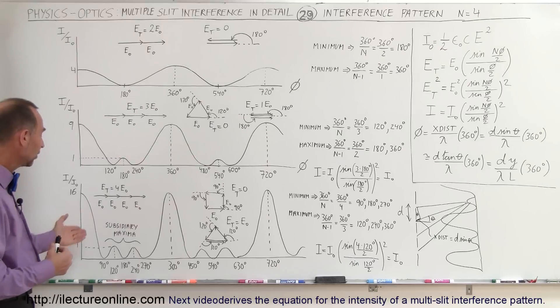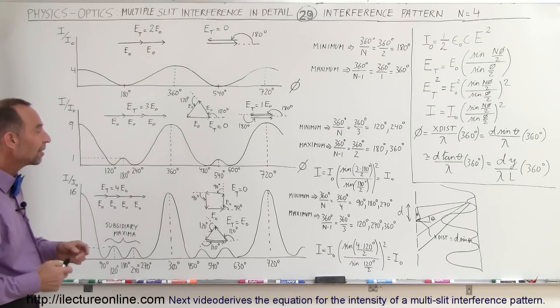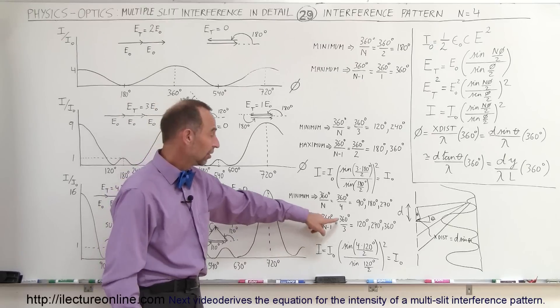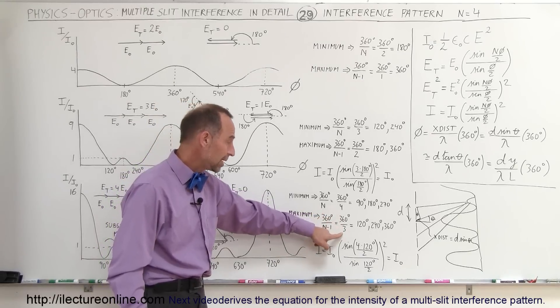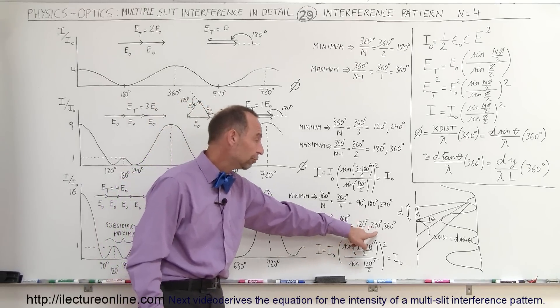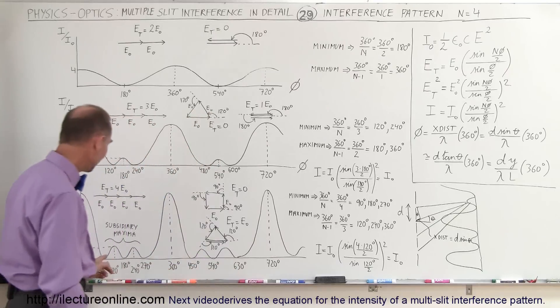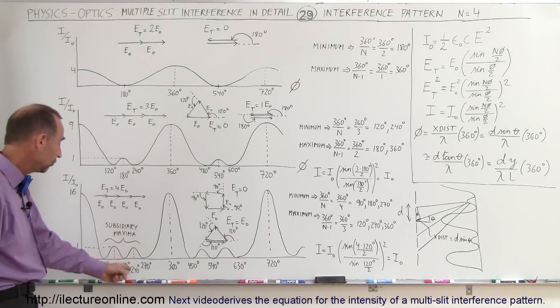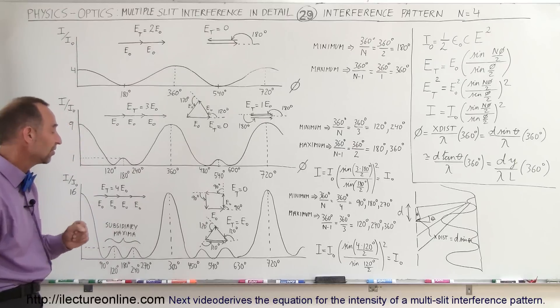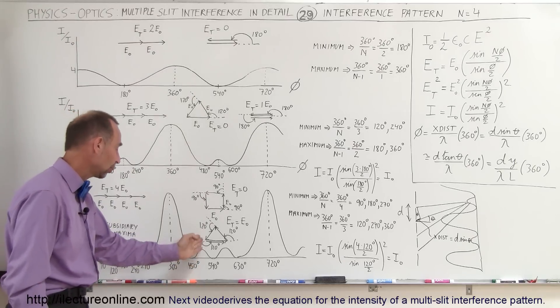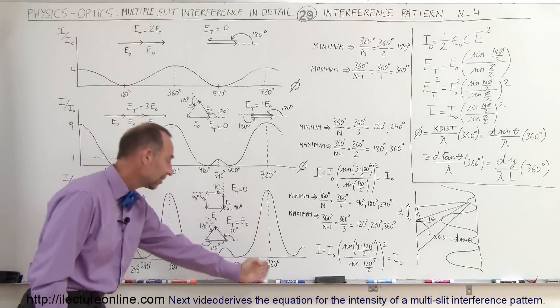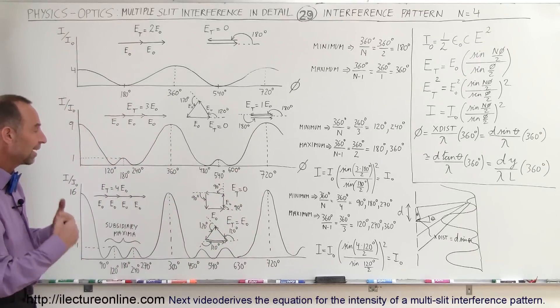The maximum, as well as the subsidiary maxima, can be found by taking 360 divided by the number of slits minus 1. In this case, it's 360 divided by 3, which is at 120, and at 240, and at 360. So we find a maximum, a subsidiary maxima, at 120, at 240, and then a full maximum at 360. And again, 360 plus 120, which is 480, that would be 600, and at 720, and so forth. That's where we find the maxima.